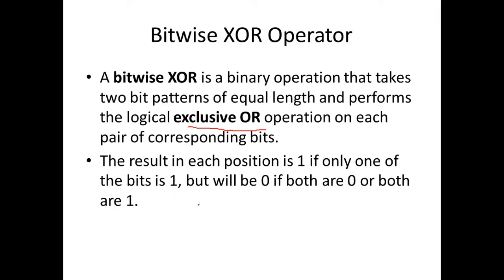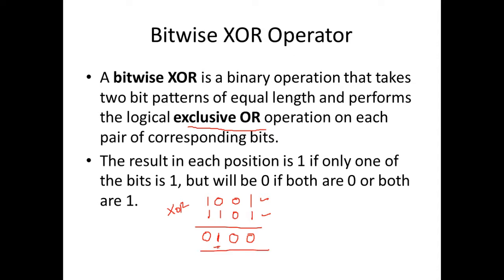Let's take two bit patterns: 1001 and 1101. If we perform an XOR, the output is 1 only when one of the bits is a 1. So here we have one bit as a 1, so we give 1. When both the bits are 1's, the output is 0. When both bits are 0's, the output is 0. When both bits are 1's, the output is 0. We call it bitwise XOR because we are working on the bits in a bit pattern.